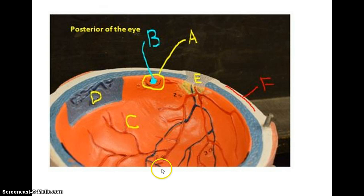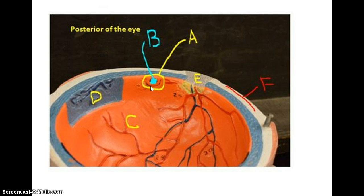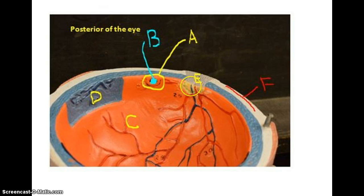If you looked at the eye from the front, the pupil would be here. When light comes back toward the retina, it's going to hit those cones, so your best color vision is when you're looking straight at something. Here you can also see the optic nerve, and this little yellow structure is the optic disc, which gives you the blind spot you'll discuss in class.